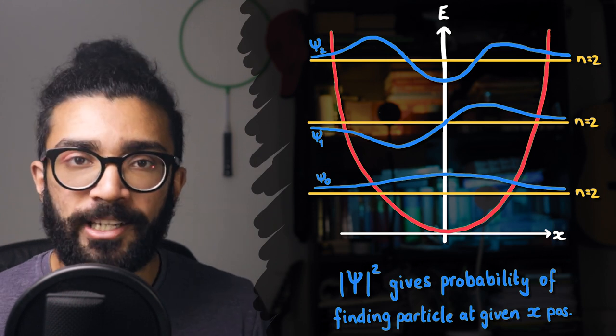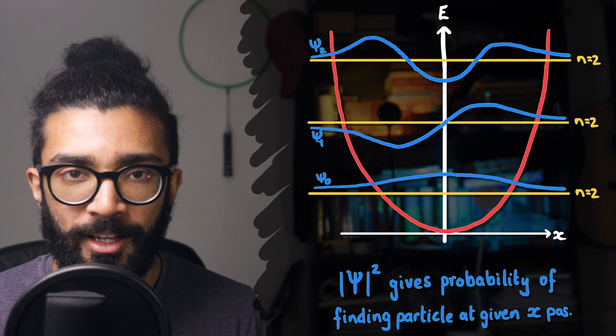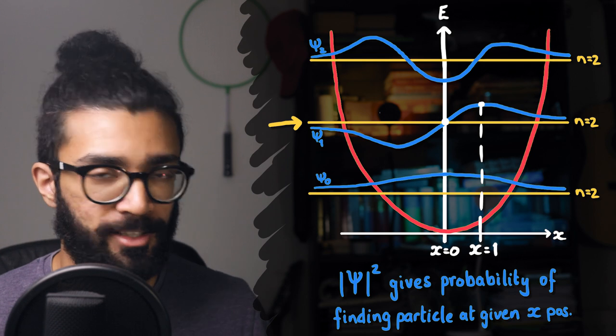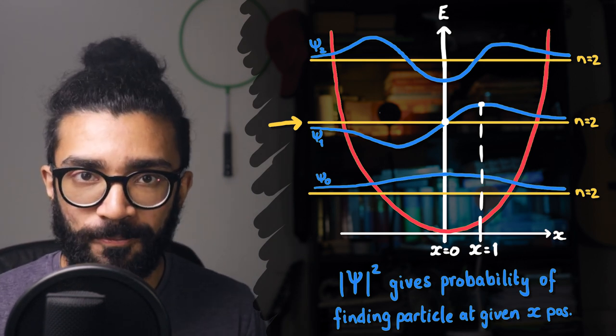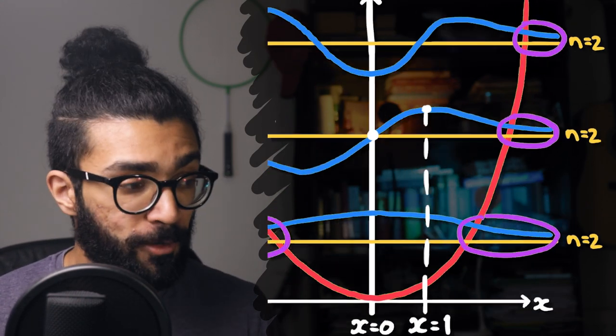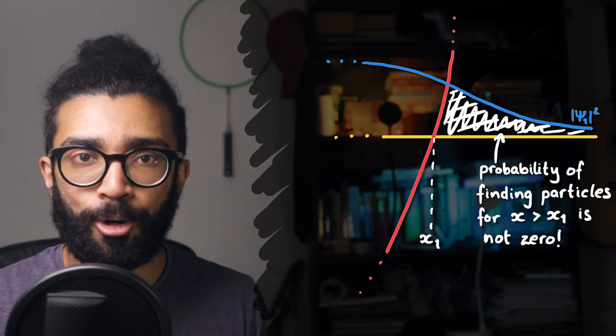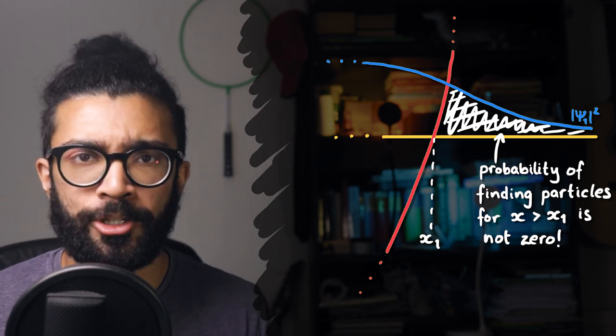Remember that a wavefunction is directly related to the probability with which we will find a particle at a particular position. Specifically, squaring these wavefunctions gives us a probability distribution. So for example, with this energy level, we're highly likely to find a particle at x equals 1 say, but there is no chance of finding it at x equals 0. That's not the interesting bit though. Look at these regions over here. The square of the wavefunction in these regions is not 0, which means there is some probability of finding our particles in these regions.